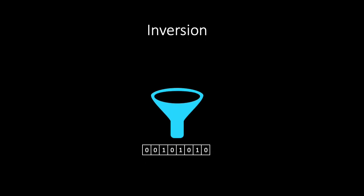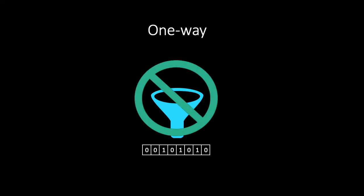Secondly, the inversion of a hash function is the problem of finding an input that gets mapped to a given value. A hash function is called one-way if it is easy to compute but hard to invert.